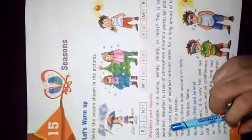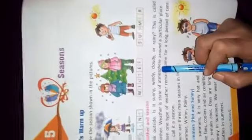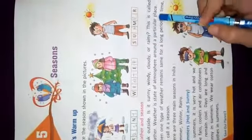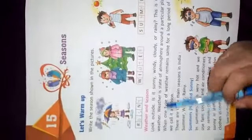What is weather? Weather is a condition of atmosphere — atmosphere means our surrounding — around a particular place. When one type of weather remains the same for a long period of time, we call it a season.